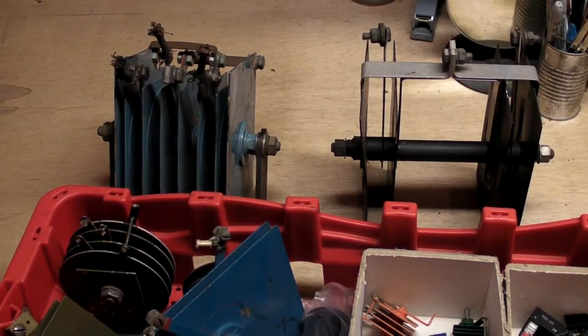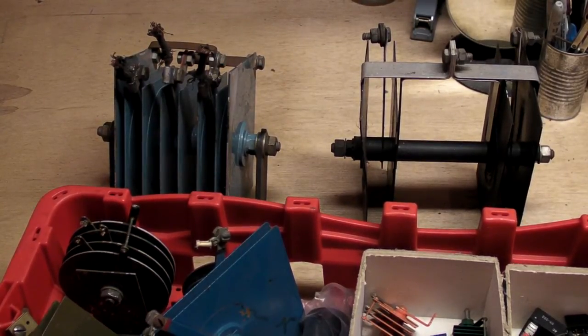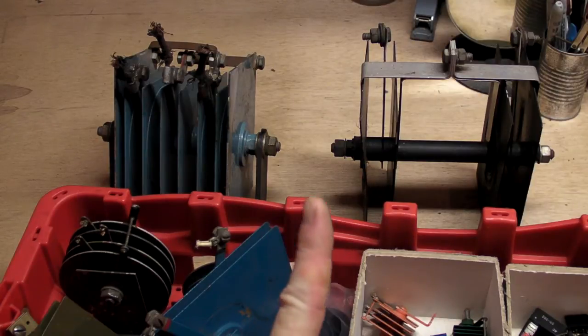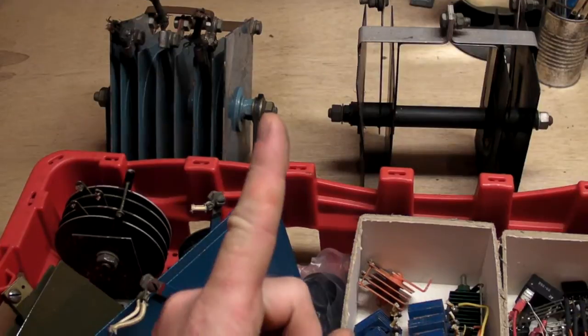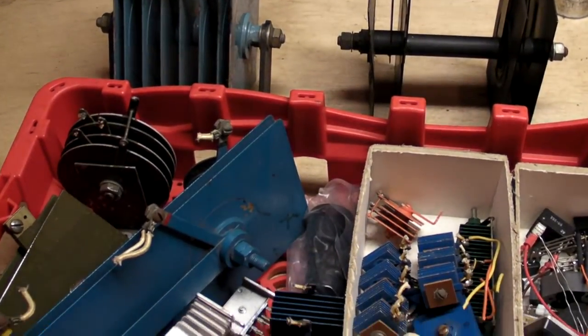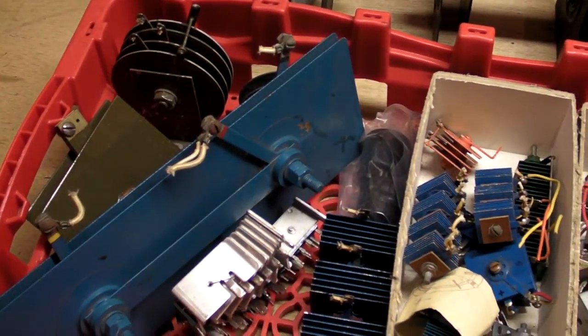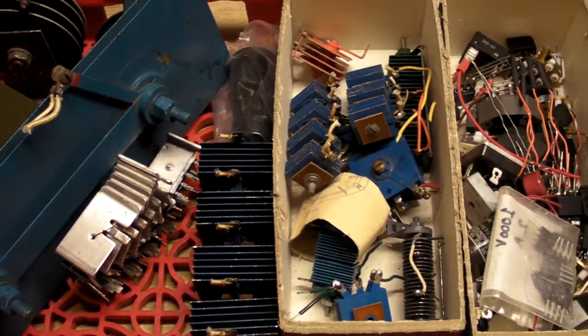A few months ago I made a video about selenium and copper oxide rectifiers. In that video I was talking about the different types of metal rectifiers that existed before we had silicon and germanium rectifiers.